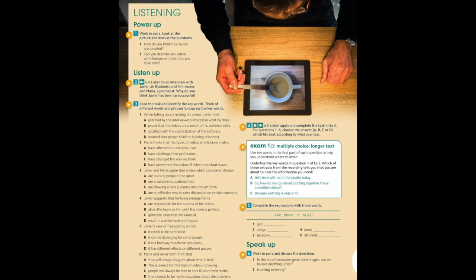What you'll need for this lesson is two pages from the Unit 6 file on Edmodo. First of all, we're going to work with the Power Up activity. Then we're going to go to the Listen Up activity, where you have activities two, three, four, and five. And then the Speak Up activity, which is meant for you to record, same way we've been doing so far.